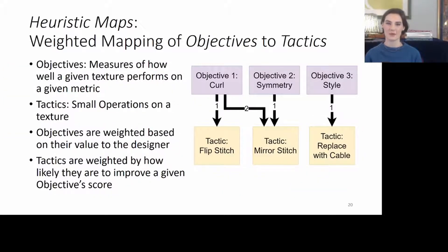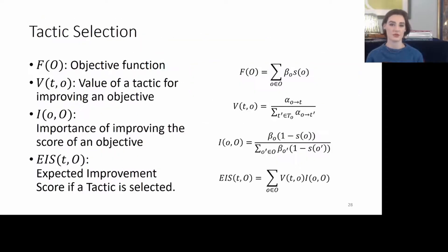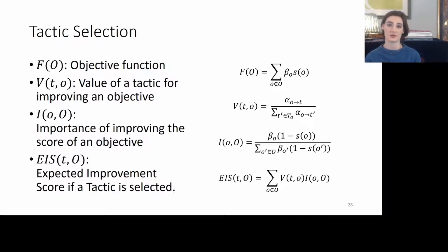Heuristic maps are a weighted mapping of objectives, which measure how well a given texture performs on a given metric, to tactics, which are small operations on a texture that produce a new texture. Objectives are weighted based off of their value to the designer, and tactics are weighted based off of how likely they are to improve an objective's score. We use a simple objective function to select tactics, which is just the weighted sum of the current scores of every objective. We determine the value of a tactic for improving a particular texture and multiply it by the importance of improving any particular objective. The expected improvement score of a particular tactic, across all objectives, is just the sum of the value of that tactic for every objective times the importance of each objective.